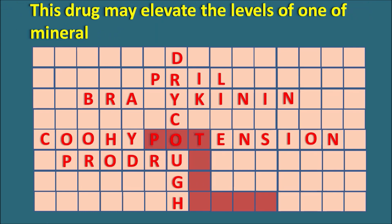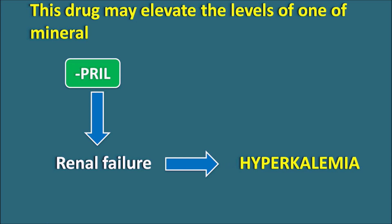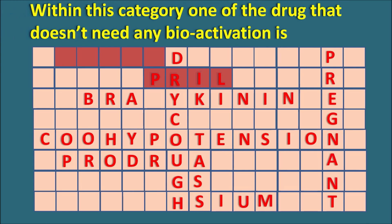This drug may elevate the levels of one mineral — starting with POT, it is very easy to identify it as potassium. PRILs produce renal failure, and because of renal failure they decrease the excretion of potassium, resulting in hyperkalemia. So ACE inhibitors increase potassium levels, and we fill in potassium for this block.